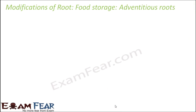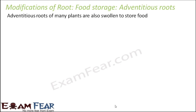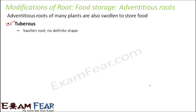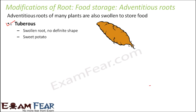Now let us look at how adventitious roots are modified to store food. Adventitious roots of many plants are also swollen to store food. The first type is tuberous — a swollen root with no definite shape. The example is sweet potato: sometimes it looks cylindrical, sometimes fusiform-like, sometimes spherical — it does not have any fixed shape.